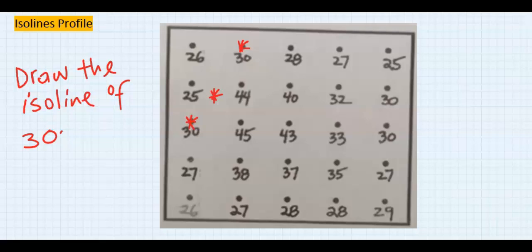Next, I will consider this is 27 and this is 38. From 27 to 38 I will encounter 30 here. So from 27 I will go 28, 29, and I will encounter 30. Next, this is 28.